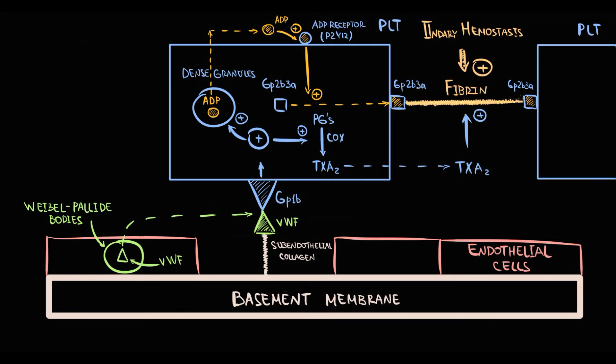Secondary hemostasis is provided by coagulation factors that form coagulation cascade. The central factor of coagulation cascade is factor X. The goal of both intrinsic and extrinsic coagulation pathways is to activate factor X. Intrinsic pathway consists of factors from 12 to 8. Extrinsic pathway consists of just factor VII.